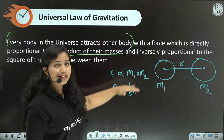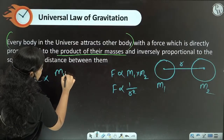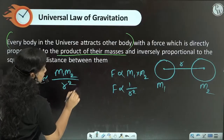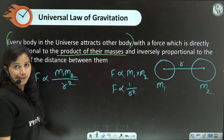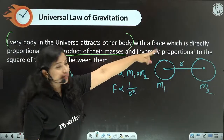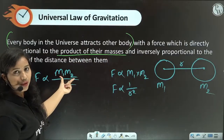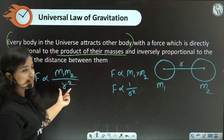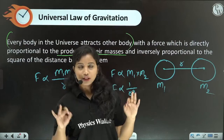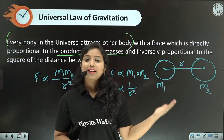Combining these two: force is directly proportional to the product of masses, and inversely proportional to the square of the distance. That is exactly this sentence: with a force which is directly proportional to the product of their masses, inversely proportional to the square of the distance. Back to the basics.